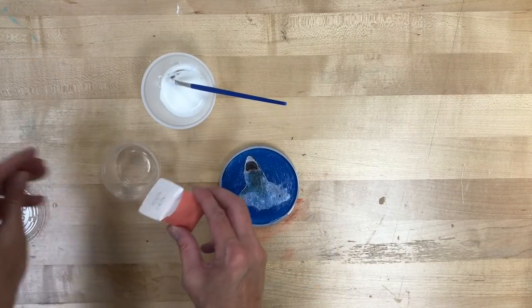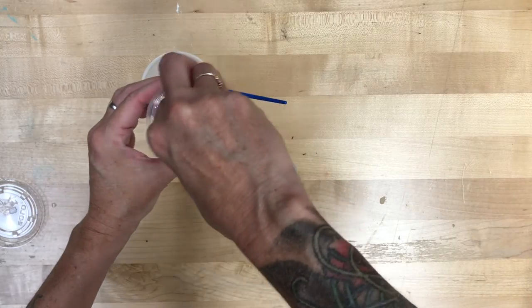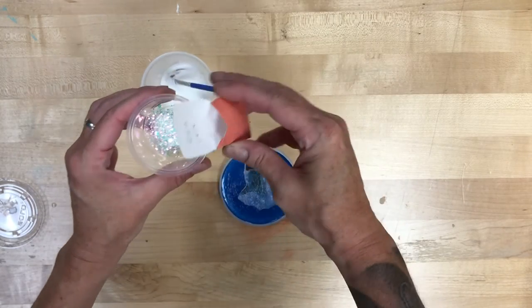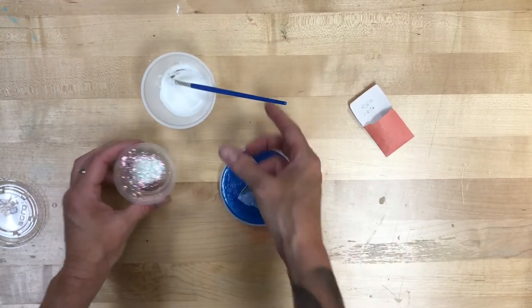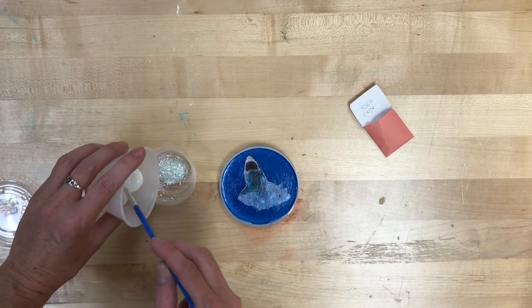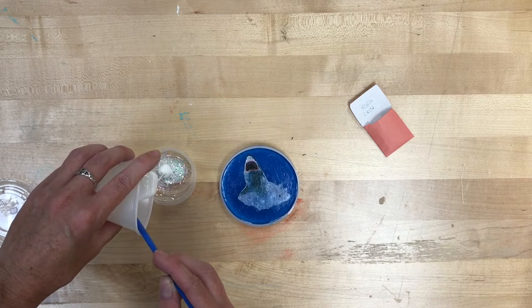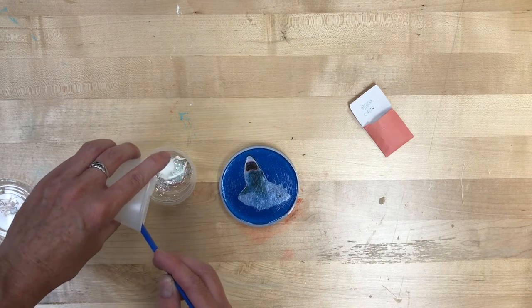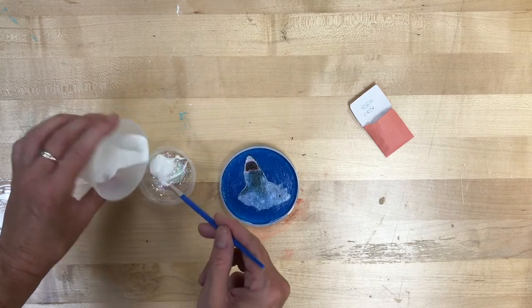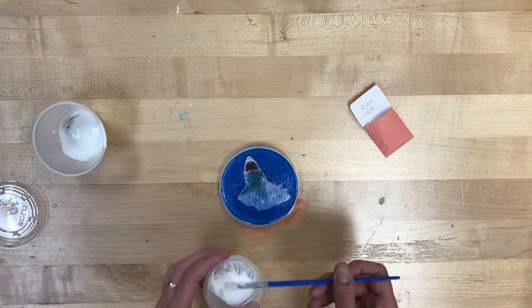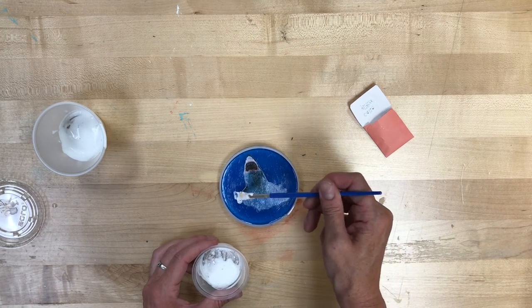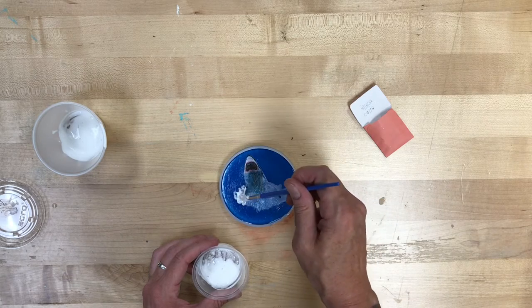Your Mod Podge is already in that small container, so you'll just dump your glitter right into there and start to mix it up. You want it to be pretty chunky because we want to kind of spackle it on there as opposed to painting it on there.